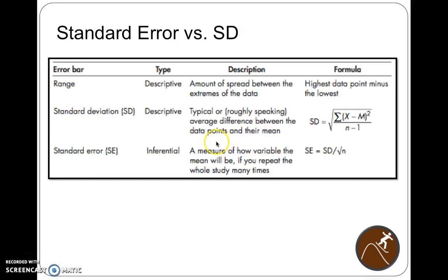The next thing we're going to discuss is standard error. Standard error is pretty common in scientific literature as well. It's a measure of how variable the mean will be if you repeat the study many times. You're dealing with little n, not big n. You're dealing with a sample. The larger the sample size, less variability, and less error in your ability to detect differences between two groups and your ability to estimate the actual true average for a population.